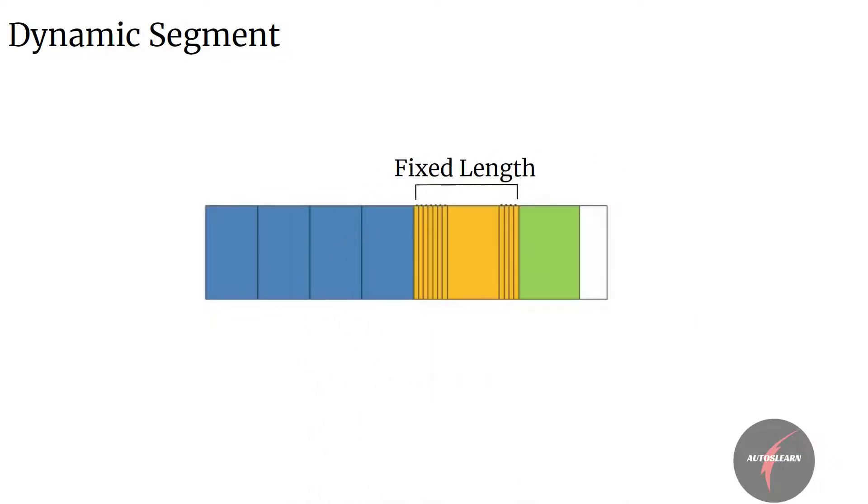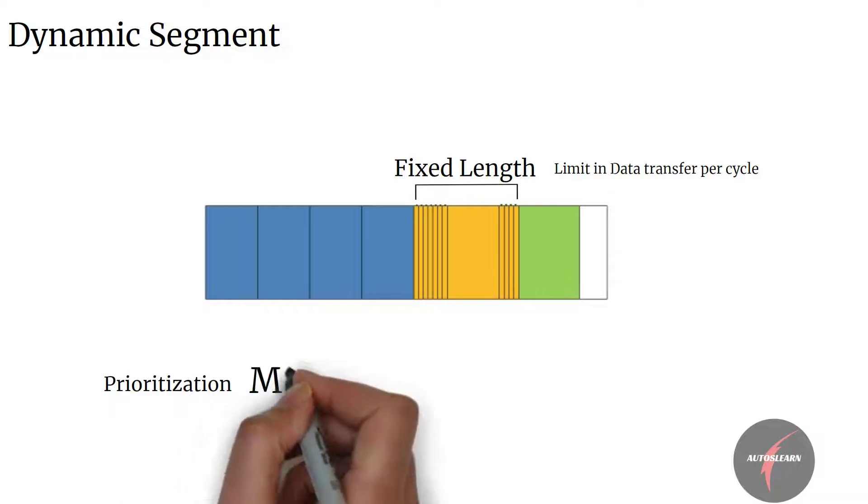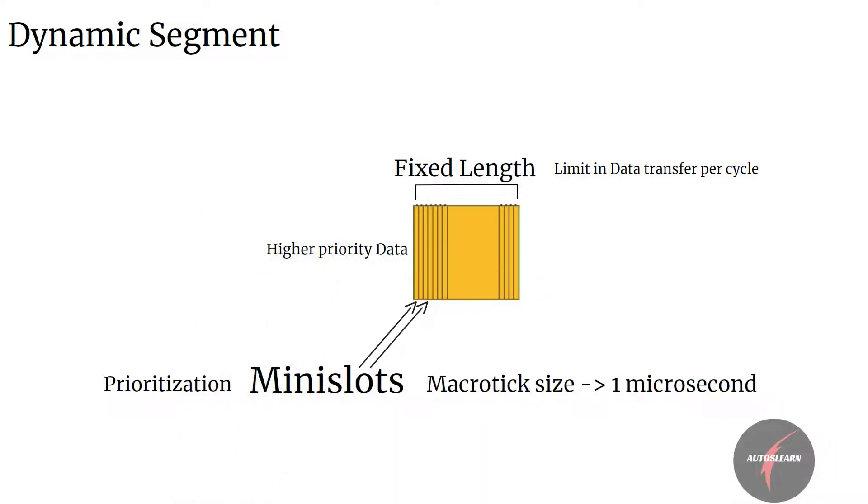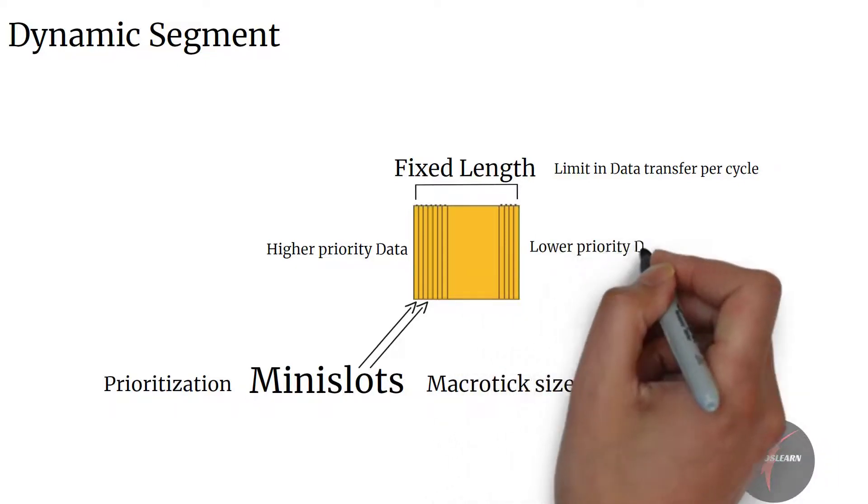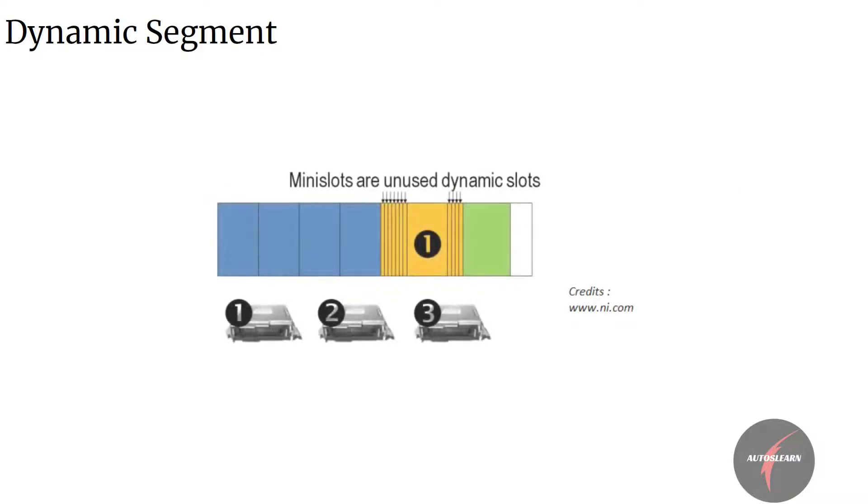To prioritize the data transmission in the dynamic segment, mini slots are pre-assigned to each frame of data. This mini slot is typically a macro tick in size, and the higher priority data receives a mini slot closer to the beginning of the dynamic frame. Once a mini slot occurs, an ECU has a brief opportunity to broadcast its frame. If it doesn't broadcast, it loses this spot in the dynamic frame and the next mini slot assigned to other ECUs occurs.